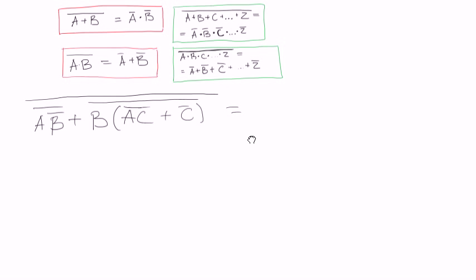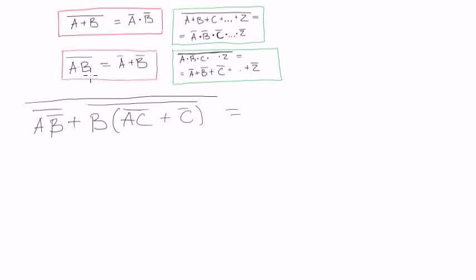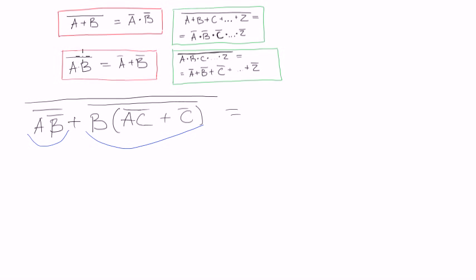So we start and we see that we can apply De Morgan's theorem for addition. We can split it into this part and this part, and treat them as A and B in the formula. So we will rewrite these two, negating them as in the formula. Let's do that.